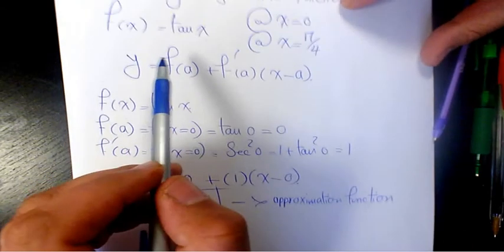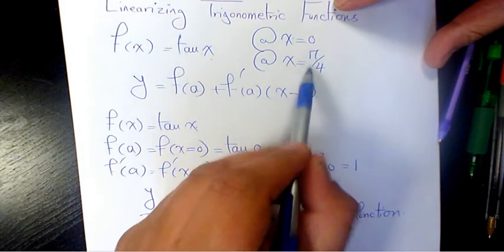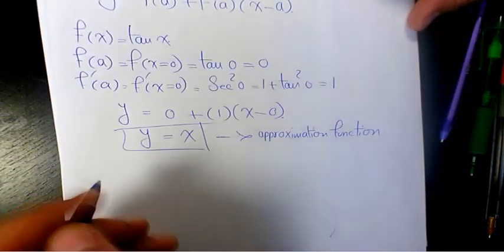Now in the second part, f of x equals tan x when x equals π over 4, so it's going to be...